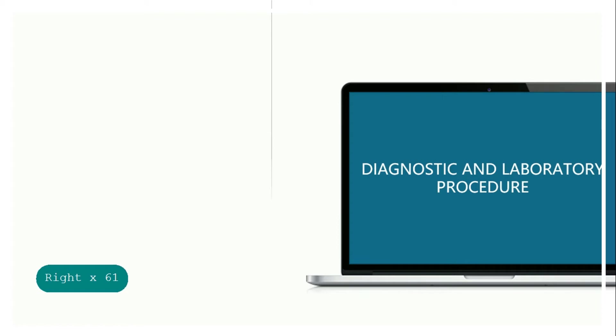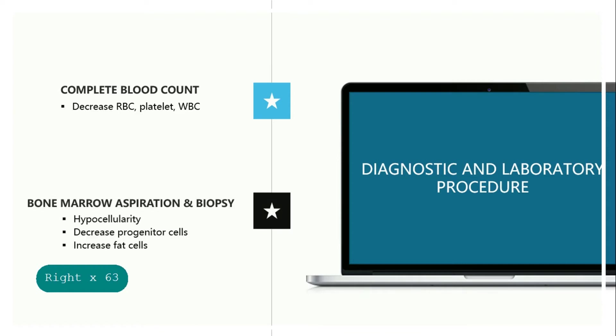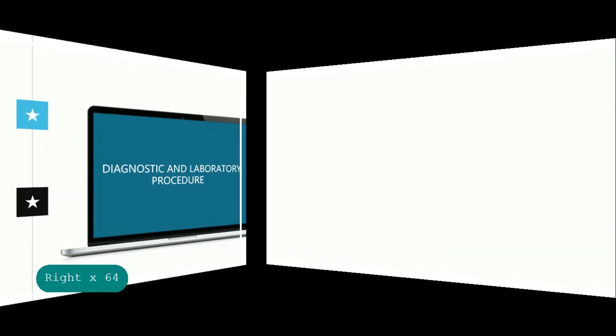For diagnostic and laboratory procedures, there is CBC or complete blood count, which may reveal decreased RBC, platelet, and WBC. Another is bone marrow aspiration and biopsy, which may show hypocellularity, decreased progenitor cells, and increased fat cells.